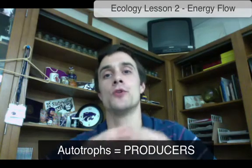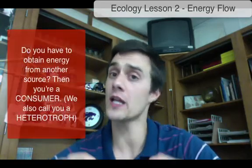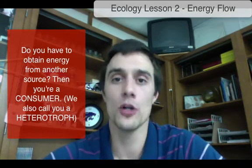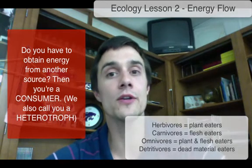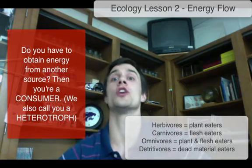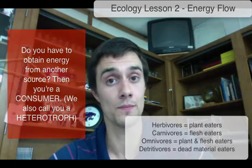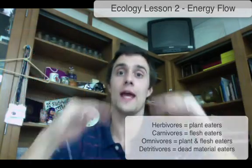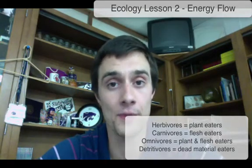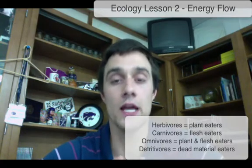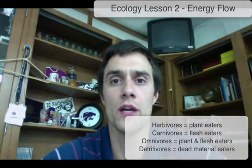The first trophic level is the producer level, filled with autotrophs, most notably plants. The second level are the consumers. A lot of times the first level of consumers, our primary consumers, are called herbivores — they only eat plants. Above them are secondary consumers, which may be omnivores or carnivores. Carnivores eat only flesh from primary consumers; omnivores eat both plant and flesh material. Occasionally we can get a third level: tertiary consumers, which are also carnivores or omnivores.